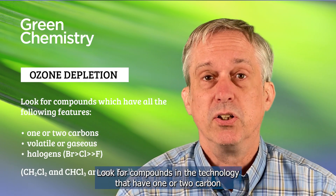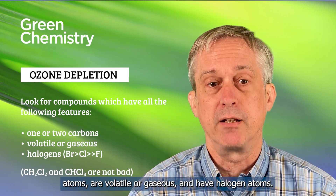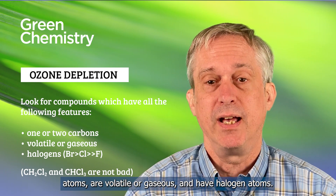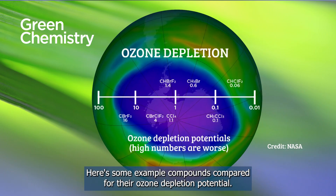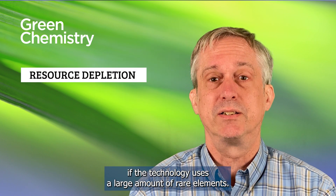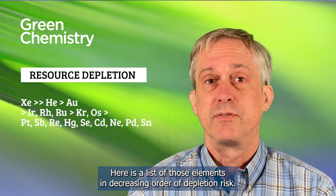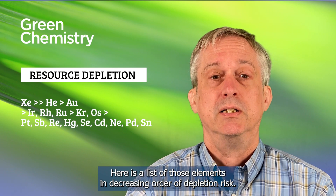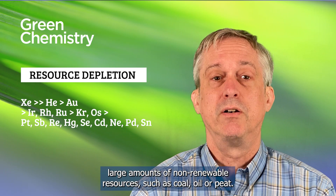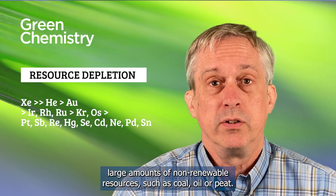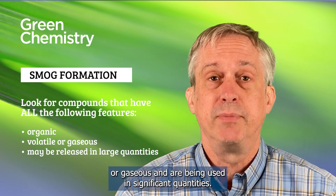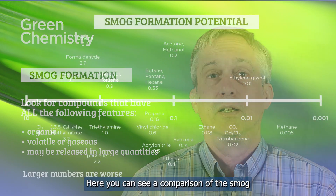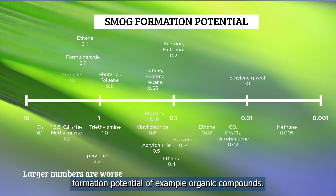Ozone depletion: look for compounds in the technology that have one or two carbon atoms, are volatile or gaseous, and have halogen atoms. Don't worry about dichloromethane and chloroform — they don't really cause very much ozone depletion. Here are some example compounds compared for their ozone depletion potential. Resource depletion is a real risk if the technology uses a large amount of rare elements. Here is a list of those elements in decreasing order of depletion risk. Resource depletion is also a risk if your process uses large amounts of non-renewable resources such as coal, oil, or peat. Smog formation is a risk if any of the organic chemicals are volatile or gaseous and are being used in significant quantities. Here you can see a comparison of the smog formation potential of example organic compounds.